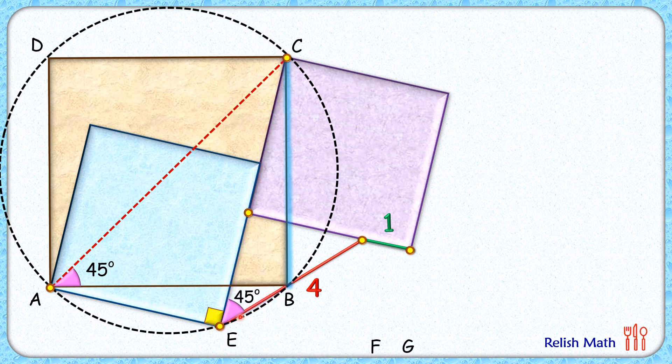Now if we look at this green triangle, this angle here is 90 degrees. Thus, this green triangle is an isosceles right angle triangle, as this angle will also be 45 degrees.